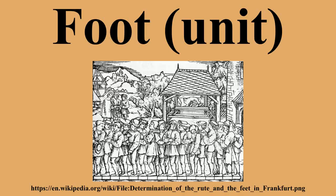Prior to the introduction of the metric system, many European cities and countries used the foot, but it varied considerably in length. For example, the voet in Ieper, Belgium was 273.8 mm, while the piede in Venice was 347.73 mm.